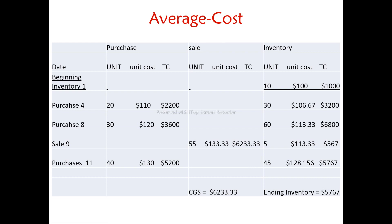The average cost method table includes: Purchase section — purchase unit, unit cost, total cost; Sale section — sale unit cost, total cost; Inventory section — inventory unit cost, total cost. Let's begin inventory: unit cost, total cost.